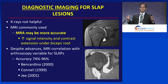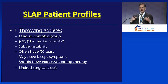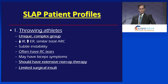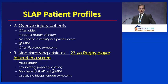Let's talk about the different types of patients who get SLAP lesions, because it's very pertinent to what we do for these patients. Throwing athletes — that's a unique group, a complex group. My advice: don't operate on them if you don't have to. The second group is overuse injury type patients. These are often older patients with indistinct injuries who often have biceps symptoms. That's not really our guy.